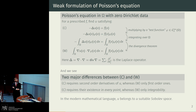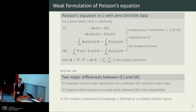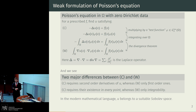So what are these weak solutions? For simplicity, let's take Poisson's equation, which appears, for example, in electrostatics. This is its classical pointwise formulation, and by multiplying this classical pointwise formulation by a so-called test function, integrating over the underlying domain omega, and using the divergence theorem, we end up with this so-called weak formulation.